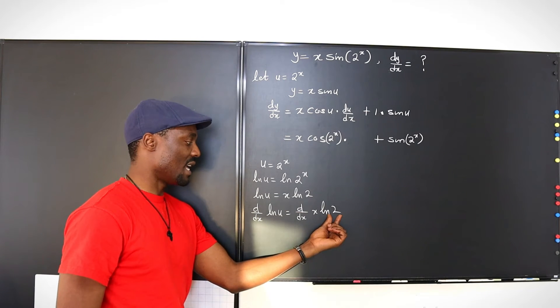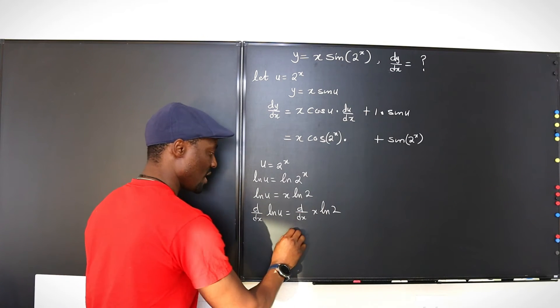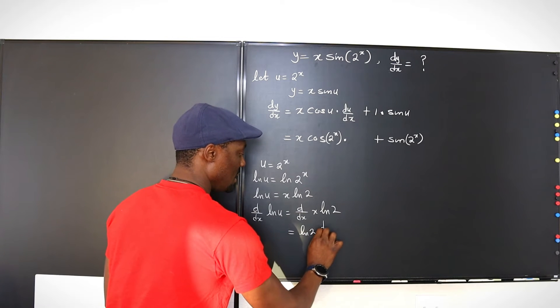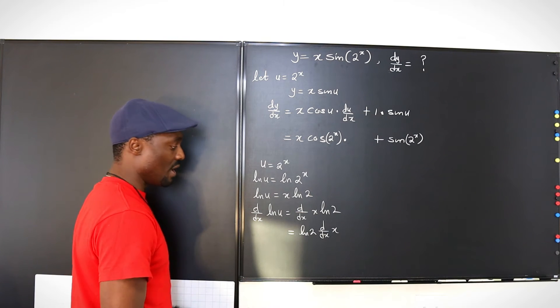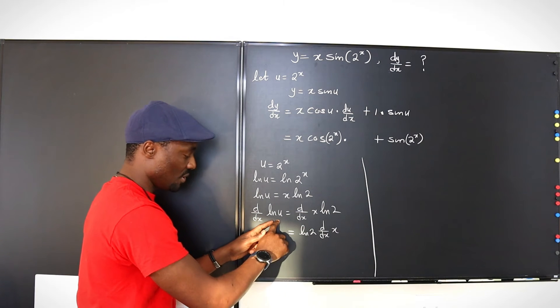And remember, because this is a constant, it doesn't have to be on the front. You can bring it here, ln 2 d dx of x. Now, that's what you have.